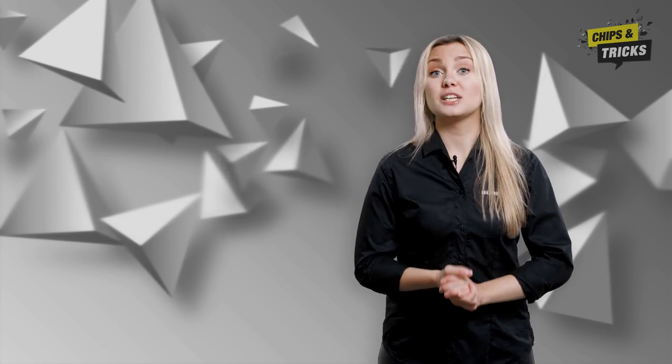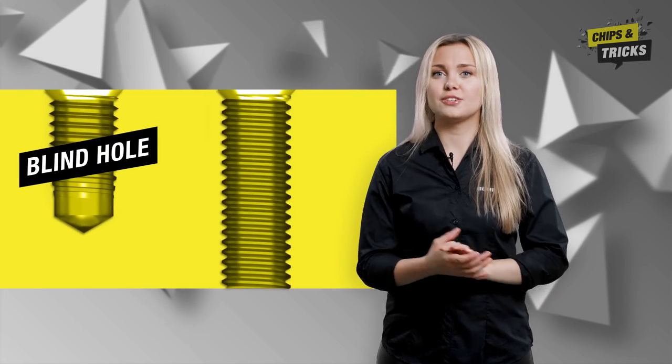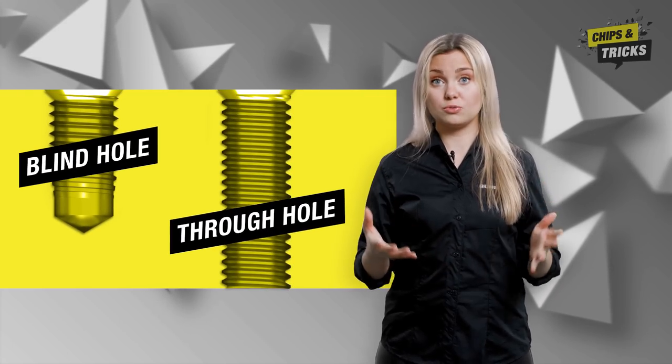Basically, if you want to make a screw connection, you need a thread. Probably the simplest type of internal thread is the so-called through-hole.